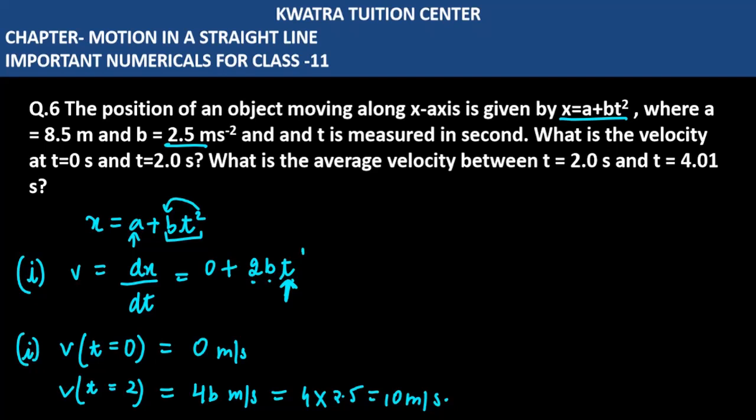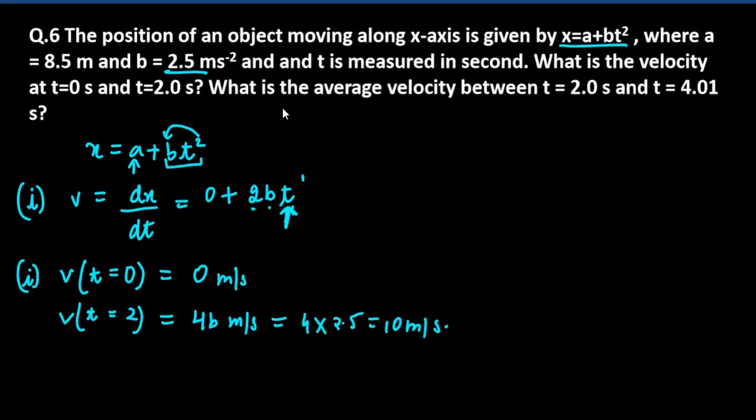We have to take the average velocity between t equals 2 and t equals 4.01 seconds. Like the last case, the average velocity is displacement over time.